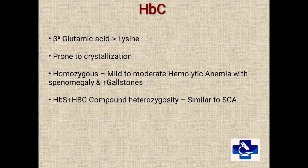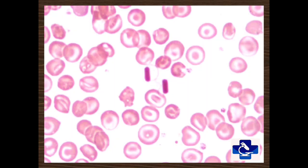Coming to HbC — in the same beta-6 position, the glutamic acid is replaced with lysine. This hemoglobin is prone to crystallization, and homozygous individuals have mild to moderate hemolytic anemia with splenomegaly and increased incidence of gallstones. HbS plus HbC compound heterozygotes have clinical features similar to sickle cell anemia. This peripheral blood smear picture shows the crystallized HbCs in the homozygous state.